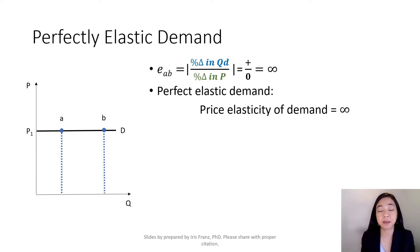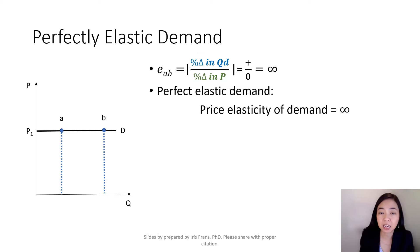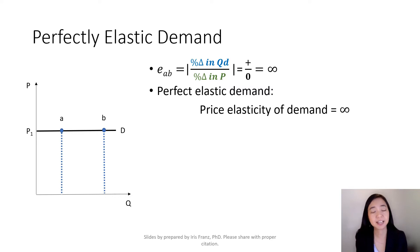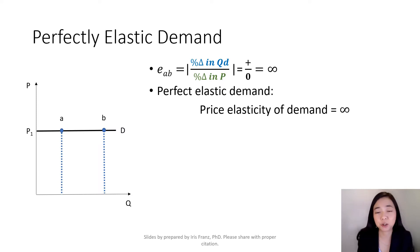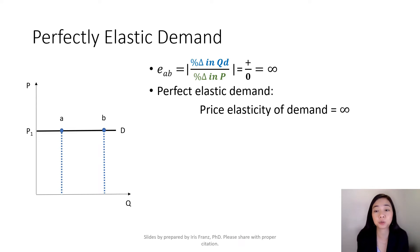Perfectly elastic demand occurs when we have a horizontal demand curve. Your price elasticity of demand is equal to the percentage change in quantity demanded divided by the percentage change in price. When you have a horizontal demand curve, you cannot change the price, so the percentage change in price is equal to zero. Therefore you have a positive number divided by zero, which gives you infinity. So perfectly elastic demand means our price elasticity of demand is equal to infinity.